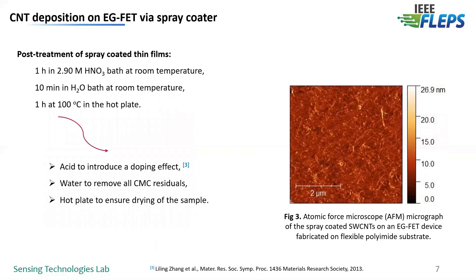Afterwards, a post-treatment of the spray-coated film is required. The devices have been immersed in 2.9 millimolar nitric acid, followed by a water bath treatment, and finally a temperature treatment for one hour at 100 degrees Celsius. The acid treatment introduces a doping effect to the nanotubes and hence increases their conductivity, while the water treatment removes all the CMC residuals in the film, because CMC in the semiconducting nanotubes acts as an insulator. In figure 3, you can see an atomic force micrograph of the spray-coated single-wall carbon nanotubes on the flexible devices.